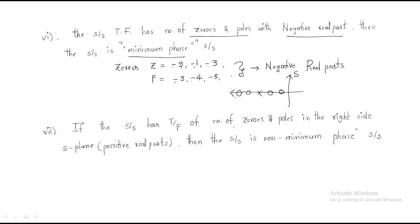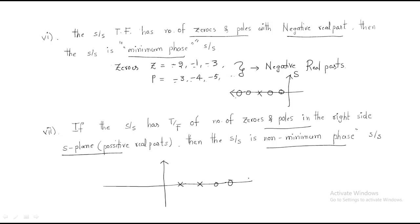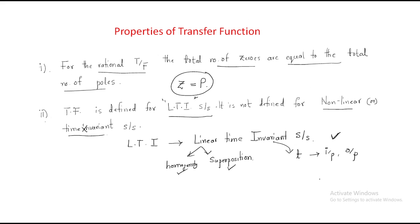If the system's transfer function has zeros and poles in the right side of the S-plane, then the system is called a non-minimum phase system. For example, if some poles and zeros are present on the right-hand side of the S-plane, it is called a non-minimum phase system. These are the very important properties of the transfer function, and they are very useful for understanding transfer functions.